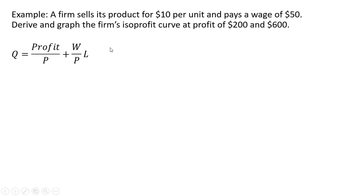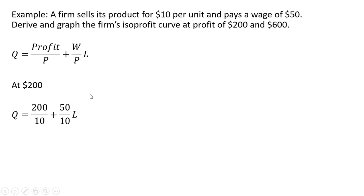Let's now do a numerical example. A firm sells its product for $10 per unit and pays workers a wage of $50. We want to derive and graph the firm's isoprofit curve at a profit of $200 and then at $600. So at $200, the isoprofit curve is going to look like this. Plugging in $200 for profit, $10 for the price, and $50 for the wage, simplifying gives us this equation for our isoprofit curve.